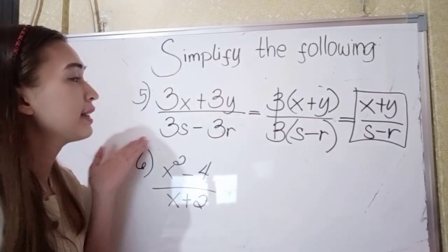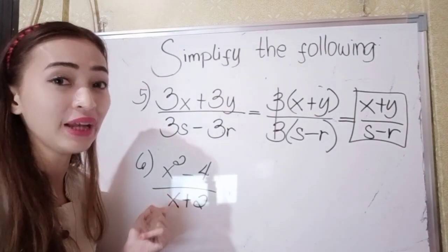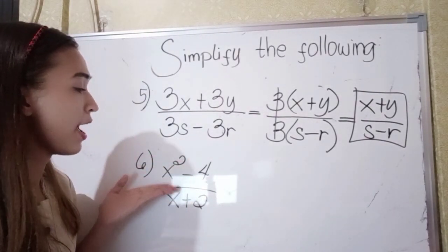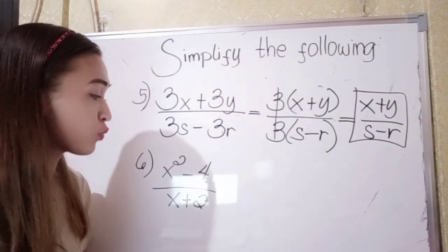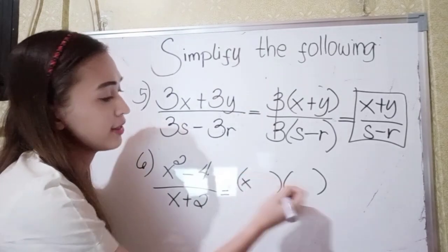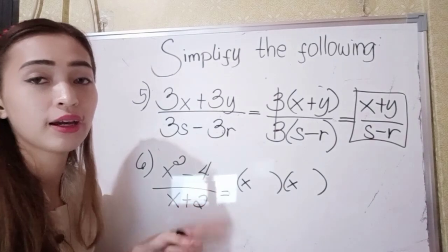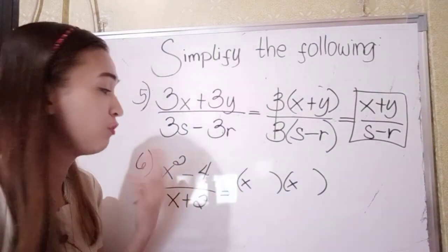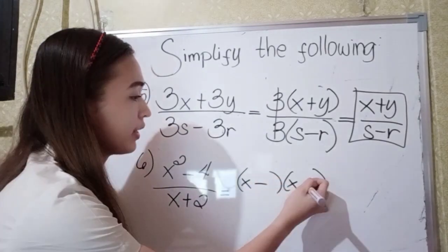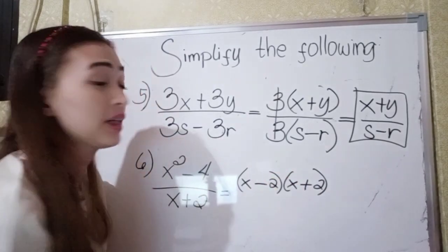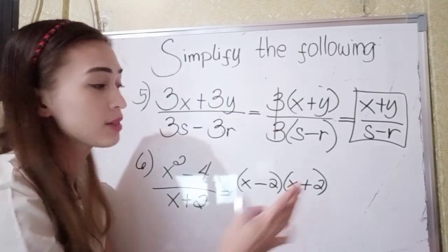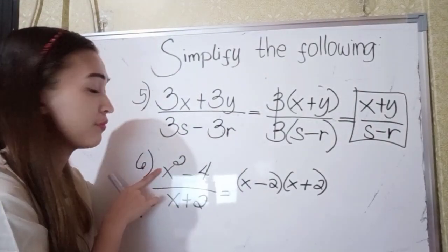That is the simplified form of 3x plus 3y over 3s minus 3r. In number 6, we have x squared minus 4 over x plus 2. Let's factor first the numerator. The factors of x squared is x times x. Think of a number — if we multiply, the answer is negative 4, and if we add them, the answer is 0 because we don't have the middle term. So that is negative 2 and positive 2, because positive 2 times negative 2 is negative 4, and negative 2 plus positive 2 is 0. So that is the factored form of this expression.